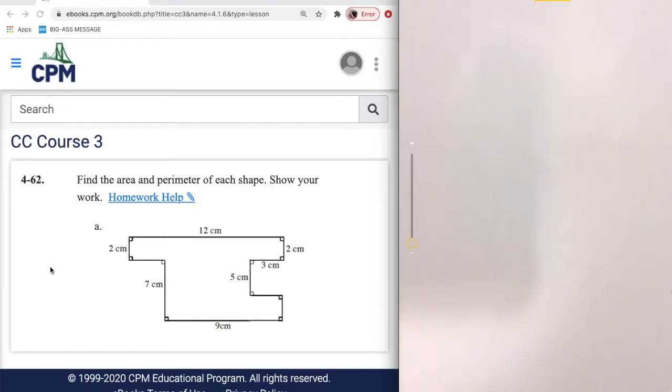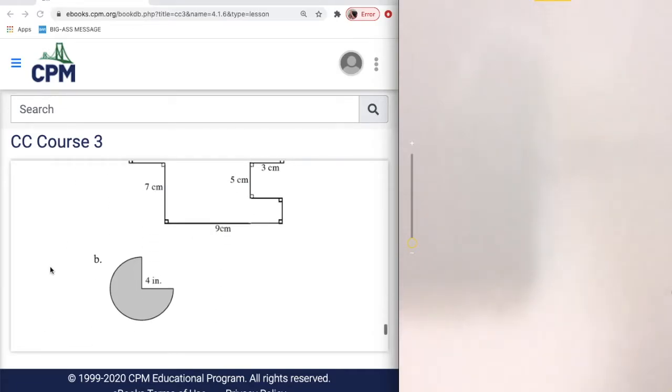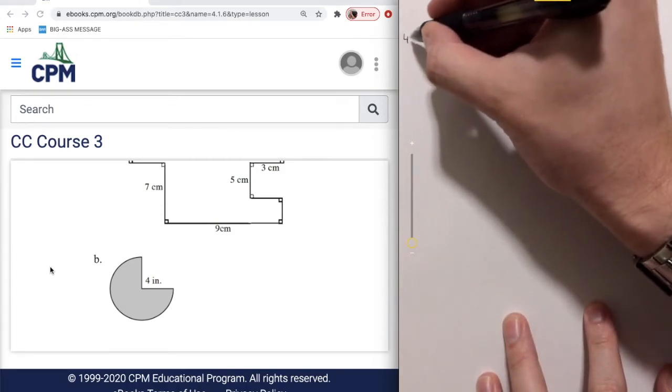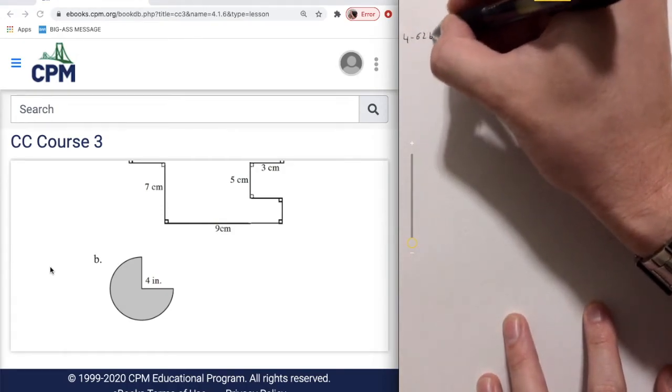From 4-62, this time we're going to be doing part B. We're given the shape and we want to find both the perimeter and the area for it. Let's start with 4-62 part B.